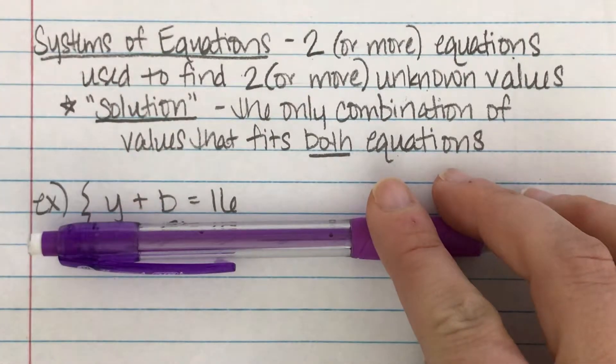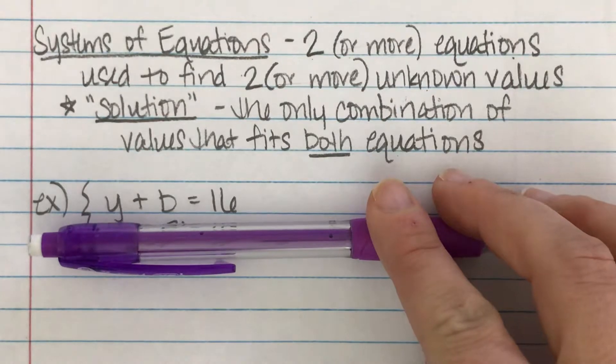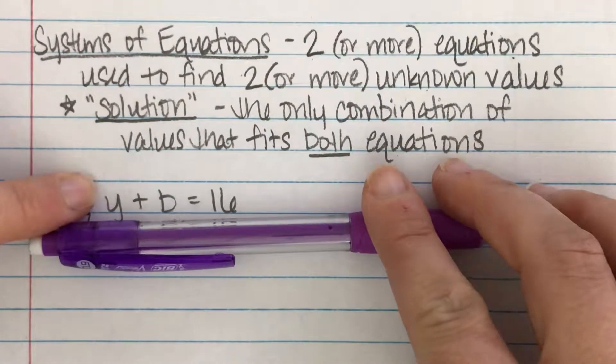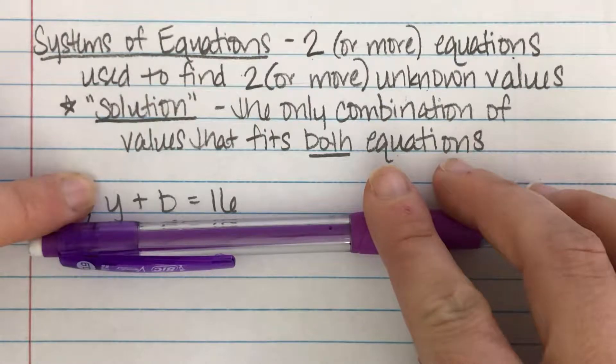It could be that we have one yellow and 15 blue or even one blue and 15 yellow. It could be two and 14, could be six and 10. You get my point. There's no way of knowing how many there are. You can narrow it down, but there's a lot of combinations.